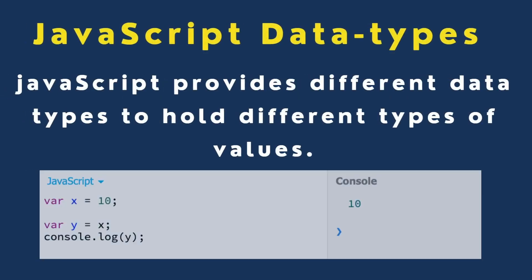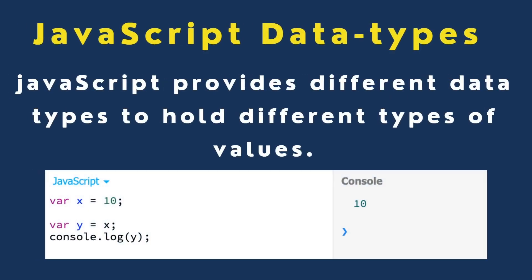JavaScript provides different data types to hold different types of values. Data types in JavaScript, as a programming language, are available.